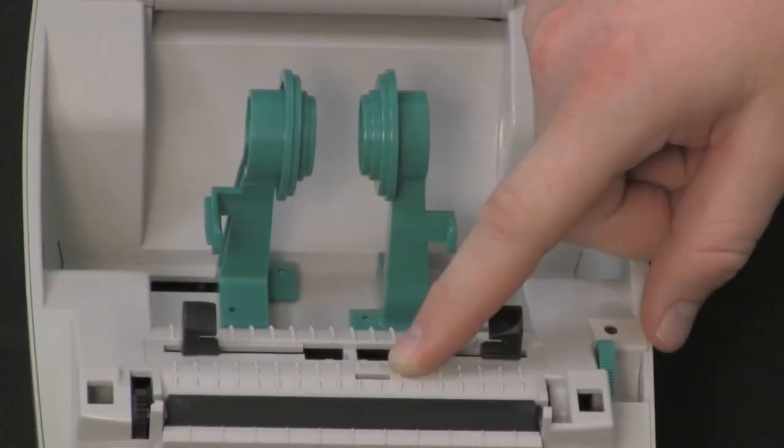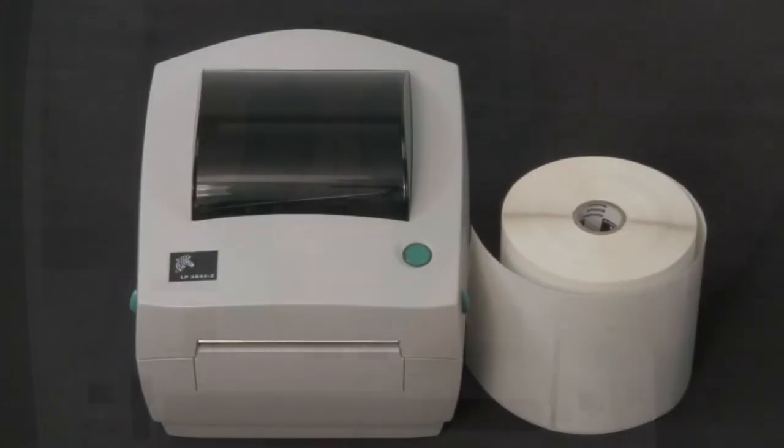This is where the media sensors are. They sense your gap, notch, black bar, or hole in the label. To load labels on an LP printer, open the cover.